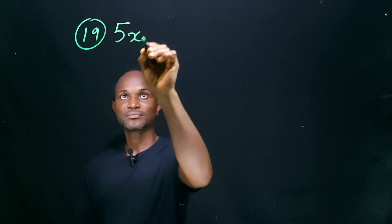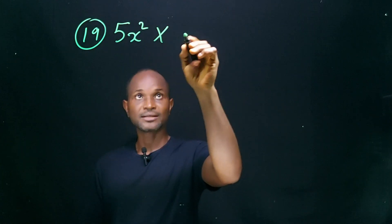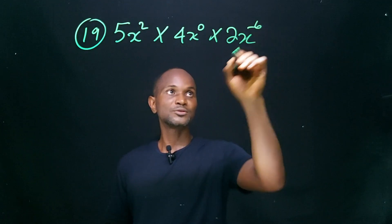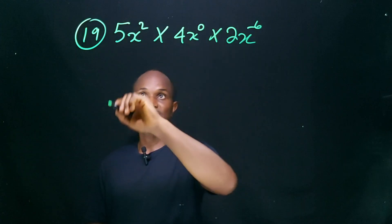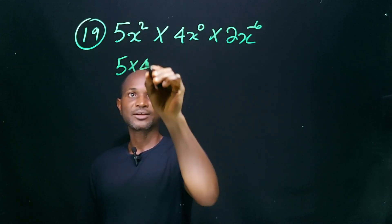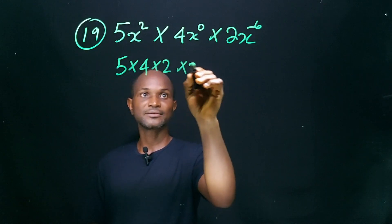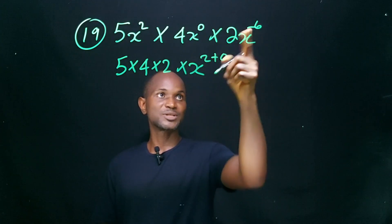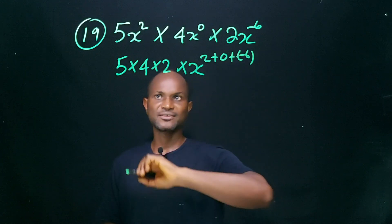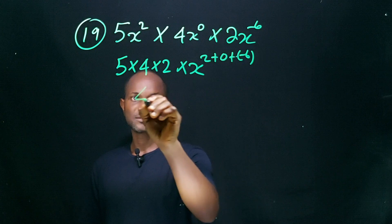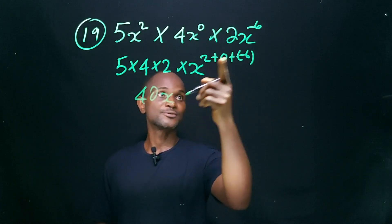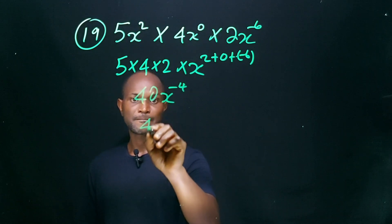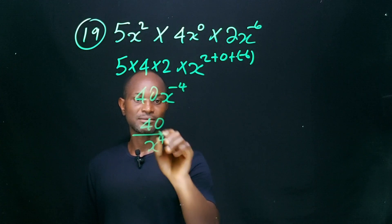Question 19: 5x squared multiplied by 4x to the power zero, multiplied by 2x to the power minus 6. As usual, we deal with the coefficients first: 5 × 4 × 2 = 40. For the x terms, we add the powers: 2 + 0 + (minus 6) = minus 4. So we have 40x to the power minus 4, which equals 40 divided by x to the power 4.